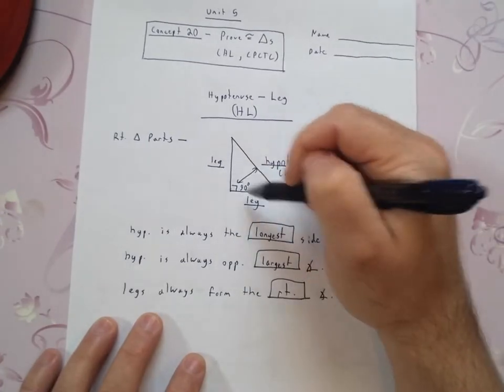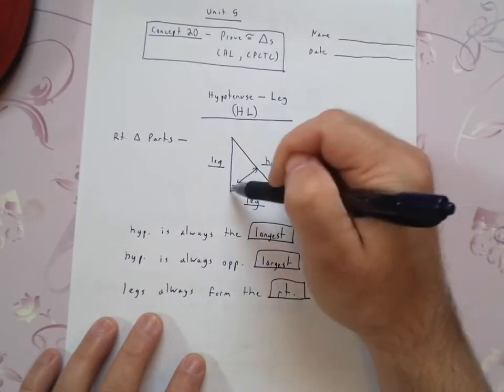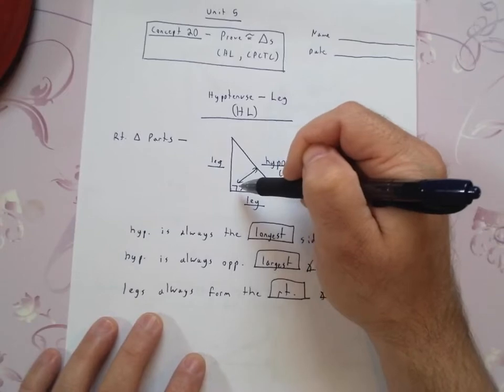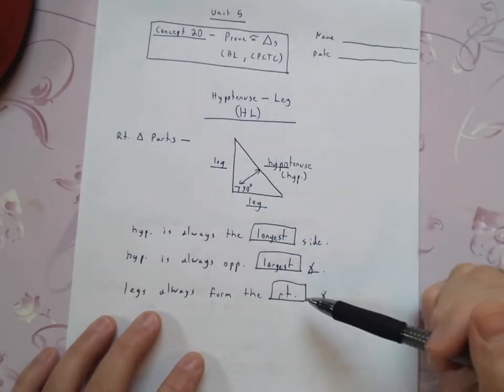If you try and tell me one of these is the hypotenuse, I know that's wrong because the hypotenuse is always across from the right angle. It doesn't touch it. So there are some parts of the right triangle.